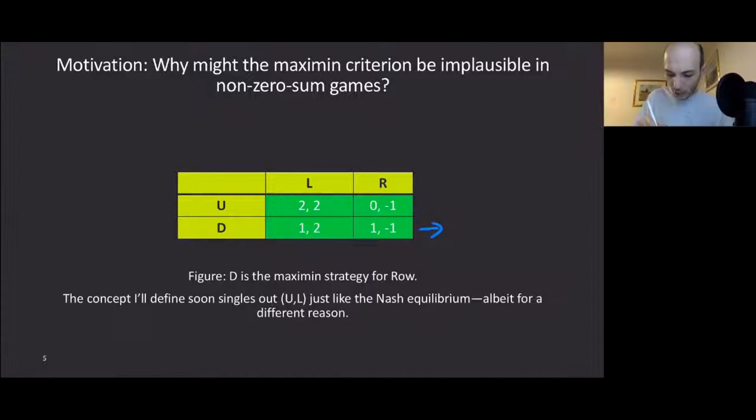Let me give you a motivation why Maximin criterion be implausible in non-zero-sum games. The Maximin strategy here is D because it guarantees 1, whereas U guarantees only 0 because a column player may choose R. However, R is an implausible strategy. R is strictly dominated. And if you remove R from the game, we could say that UL should be the solution. Indeed, the unique Nash equilibrium is UL, and the concept I'm going to introduce soon singles out UL as the solution of this game, albeit for a different reason.